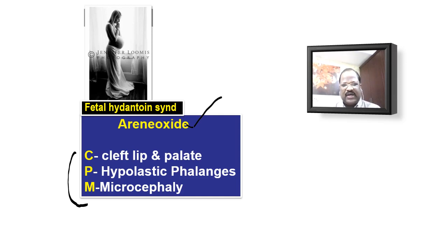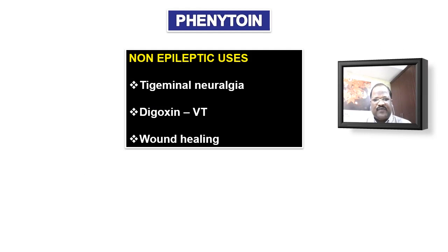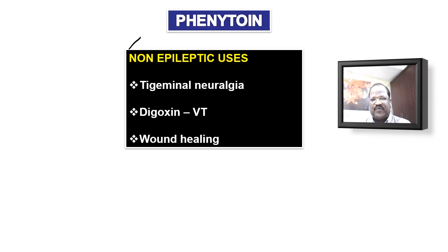What we have discussed so far: phenytoin mechanism of action, phenytoin kinetics, and phenytoin toxicity — acute toxicity and chronic toxicity. Finally, we are going to finish the video with the uses of phenytoin. We know phenytoin is an important anti-epileptic agent, but other than epilepsy, phenytoin also has some non-epileptic uses. The important non-epileptic uses are: phenytoin is useful for treatment of trigeminal neuralgia, useful for digoxin-induced ventricular tachycardia, and also useful for wound healing.